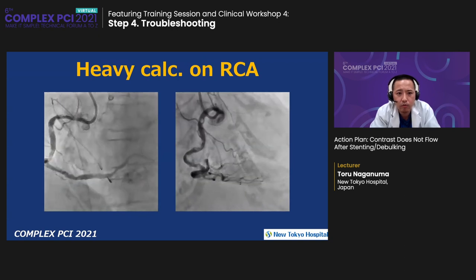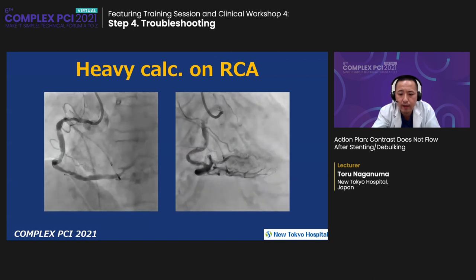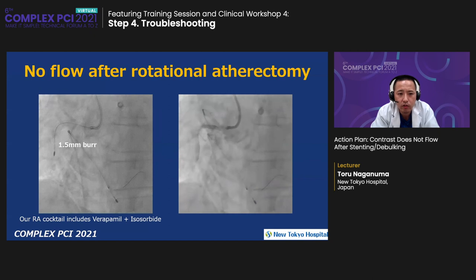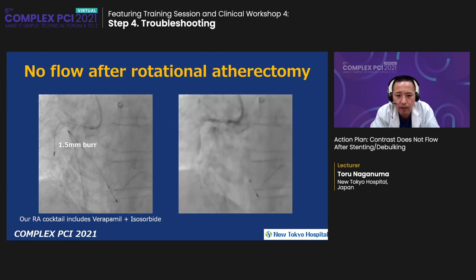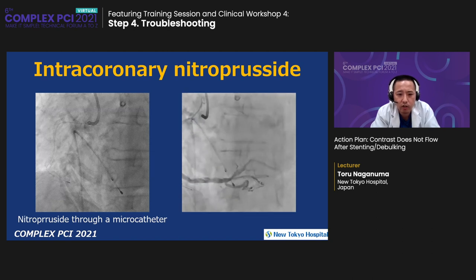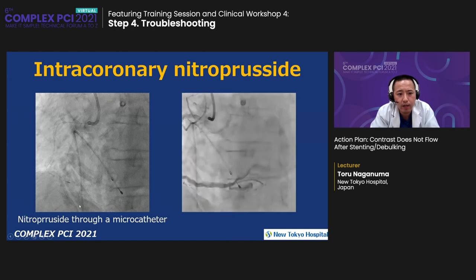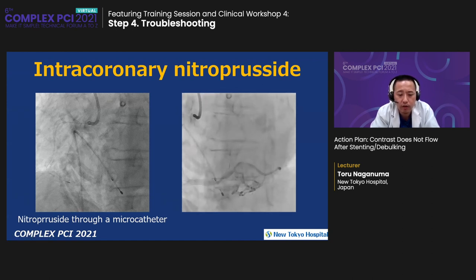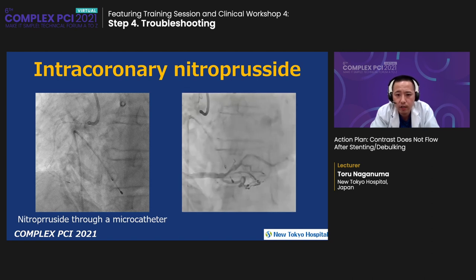Let me show one example with diffuse heavy calcification on the left coronary artery — a hemodialysis case. We performed relatively small burr rotational atherectomy. However, we found a no-flow phenomenon after atherectomy, despite using our RA cocktail including verapamil and isosorbide. In this situation, in our center, we advance a microcatheter to the distal site, then inject nitroprusside 50 mcg or 100 mcg repeatedly. In this case, fortunately, coronary blood flow increased.